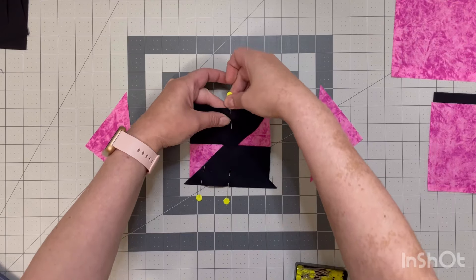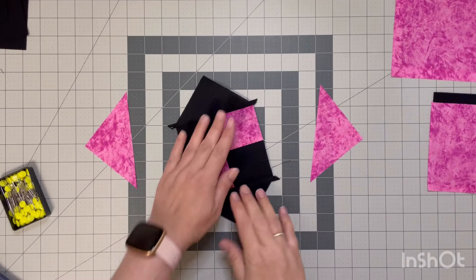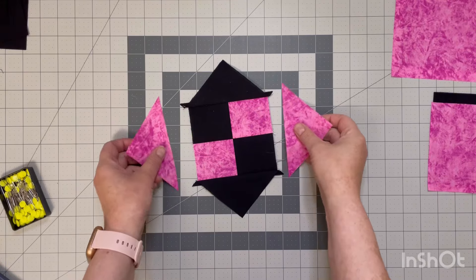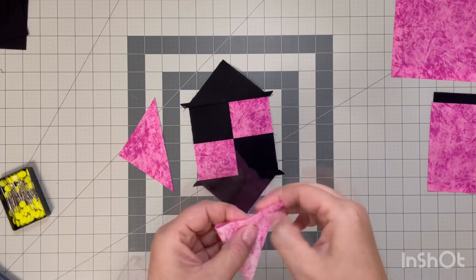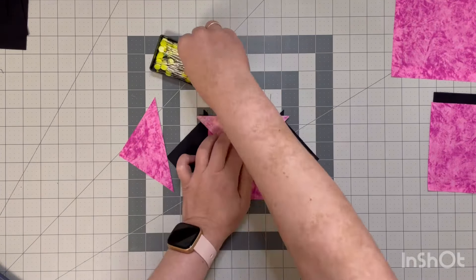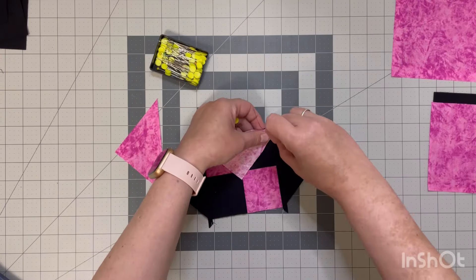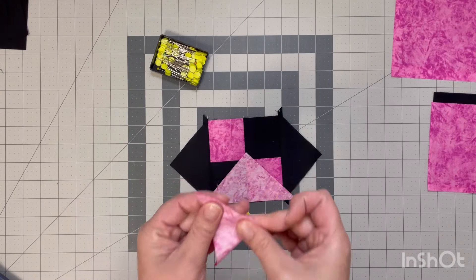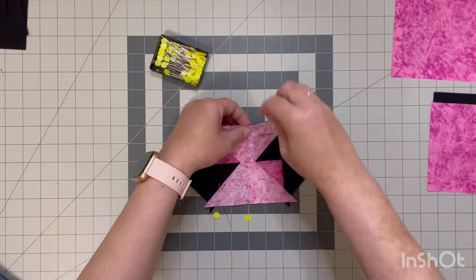I had filmed some of my sewing stuff not realizing that my daughter was there shaking the tripod so that video was not usable. But anyways I have my black ones on so now it's time to do the exact same thing with my pink ones. We're just going to center those, pin them down, and then head over to the sewing machine and sew with a quarter inch seam.